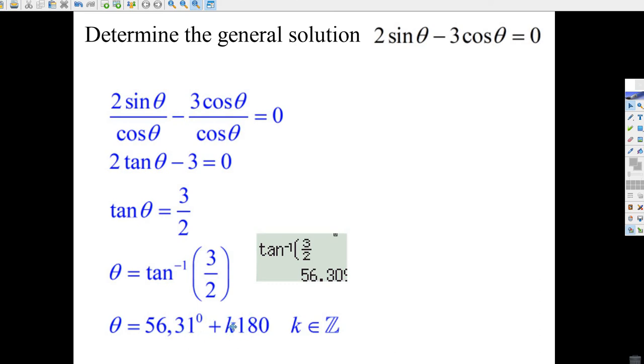And with tangent, it repeats itself every 180 degrees to the right and to the left, where k is an integer. You could add 180 or 2 times 180, 3 times 180, or minus 180 or minus 2 times 180. Anyways, k is an element of the integers.